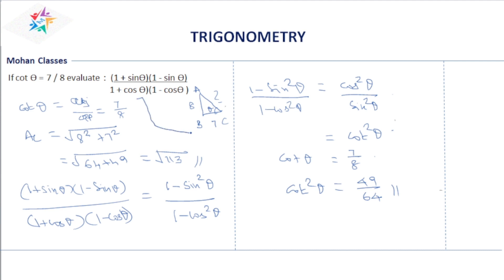We found the three sides so that if you need to find other ratios, it's easy. For this particular problem you can directly apply the identity steps, but knowing all three sides is useful for finding any ratio.